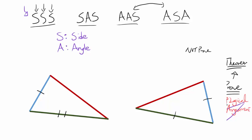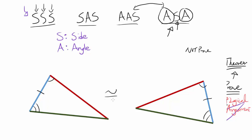Let's start with ASA before we get to AAS. ASA is telling you: if one side is congruent, and the angles surrounding that side — squishing it in between — so this angle and this angle are congruent, then the triangles themselves are congruent. That's ASA.